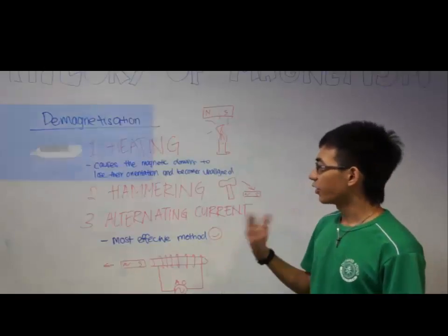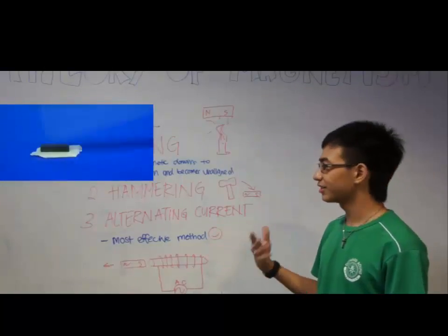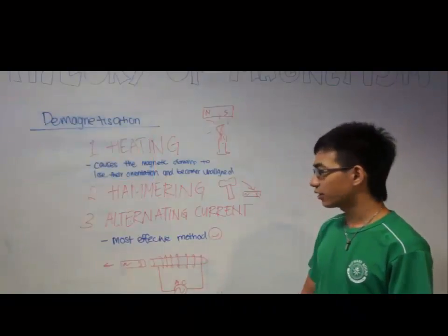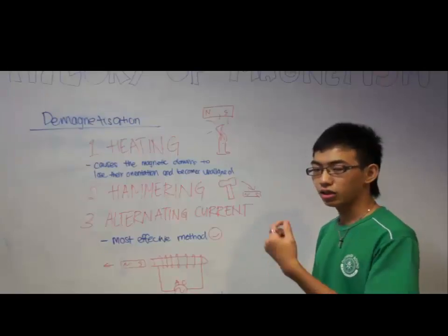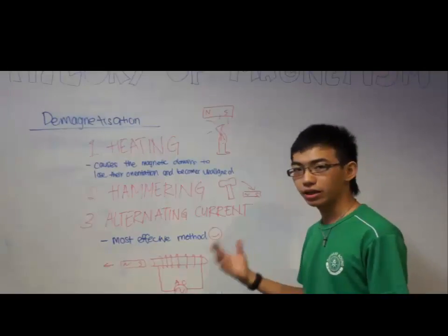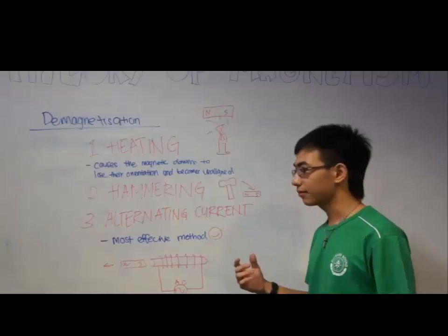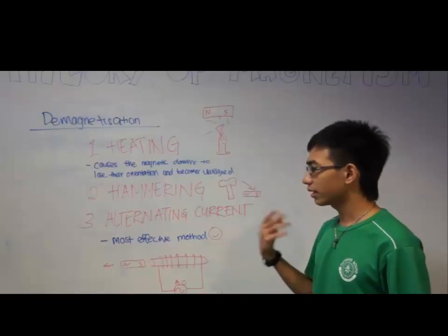Similarly, hammering also will cause the same effect. And third, alternating current is the most effective method. Why? Because you put a magnet inside a solenoid and apply alternating current to it. Slowly, you draw out the magnet, and this will cause it to lose its magnetism.